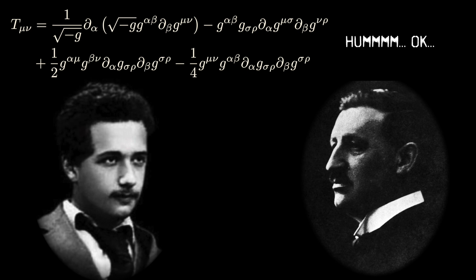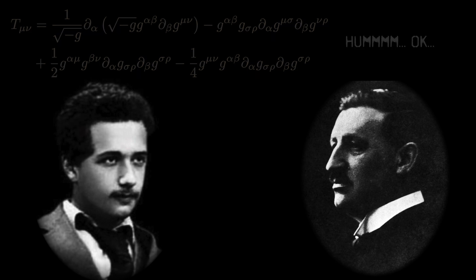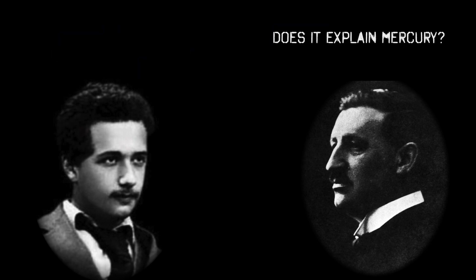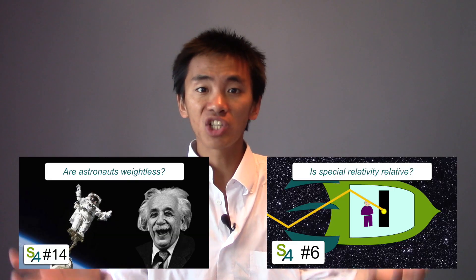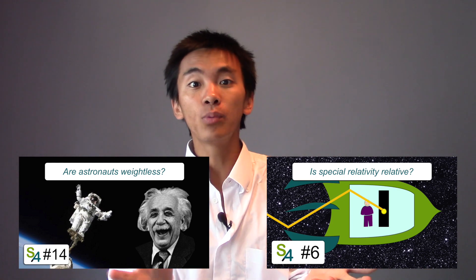However, overwhelmed by the extreme difficulty of the computations, Einstein failed to derive the trajectory of Mercury from his equation. Nevertheless, since it successfully merged special relativity and the equivalence principle, Einstein and Grossmann were actually quite pleased with the theory. And thus, they published it in 1913, and asked experimenters to put the theory to the test by chasing solar eclipses.